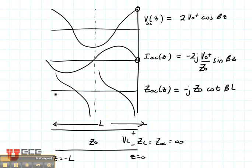So here's our open circuited transmission line. And we can see that once again, it can either be inductive or it can be capacitive. When it's positive, it's inductive. When it's negative, it's capacitive.